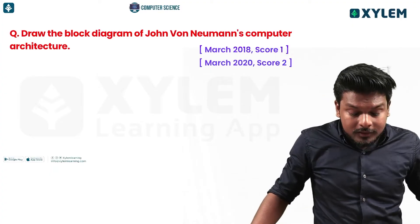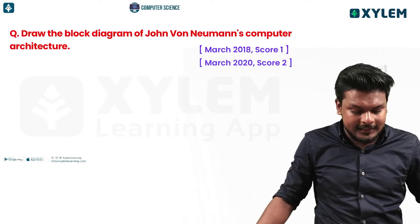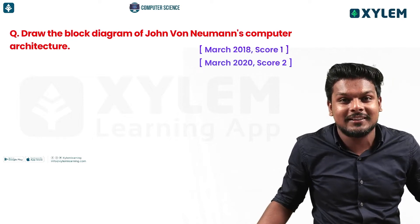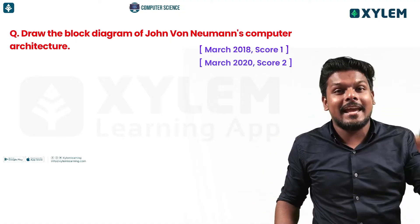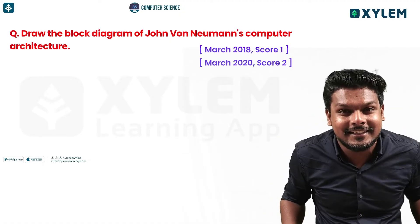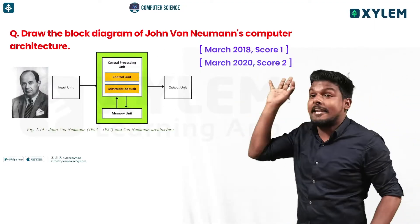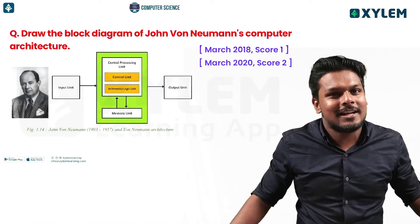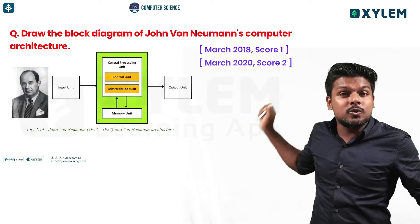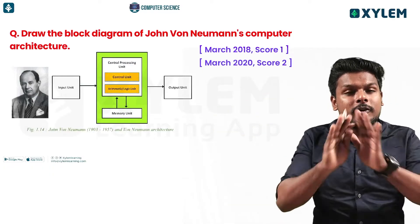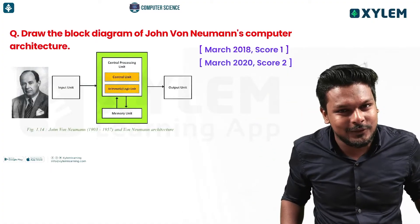Draw the block diagram of John Von Neumann architecture — that's what we call computer architecture. It includes input unit, output unit, ALU, and CU. You have to draw this block diagram for one or two marks.